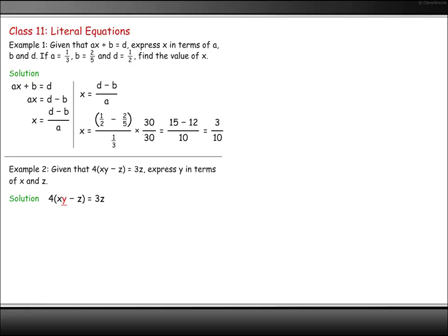Get the term with y in it on its own. Multiply out the brackets. Now isolate the 4xy by moving the 4z across. Isolate the y by dividing both sides by 4x.